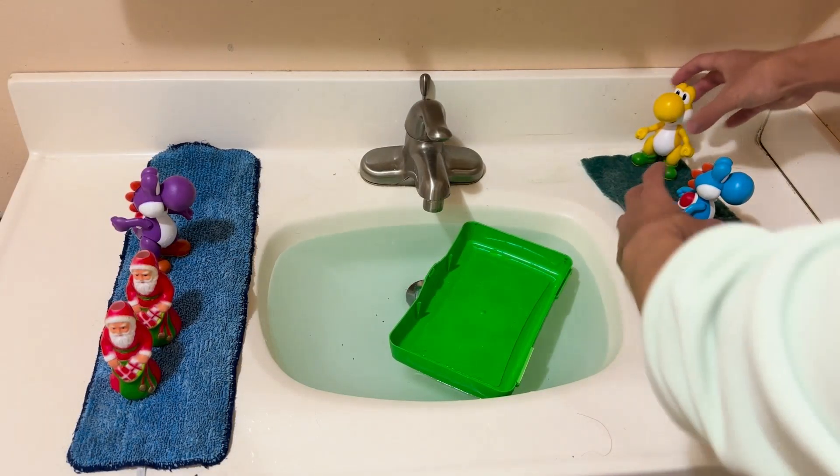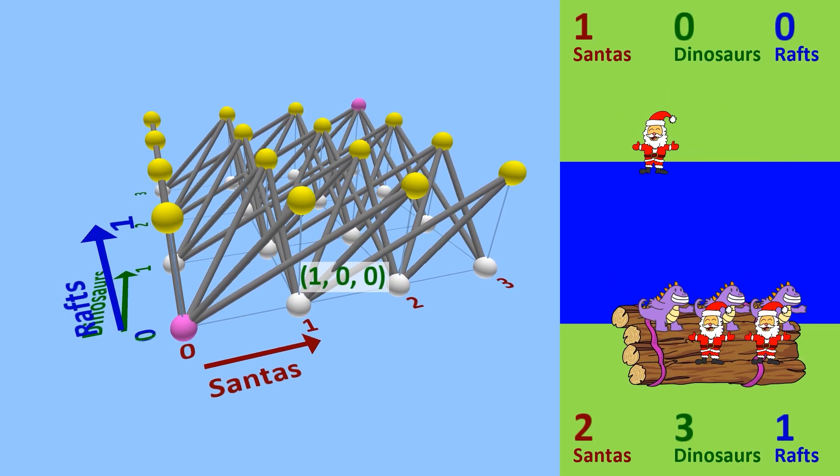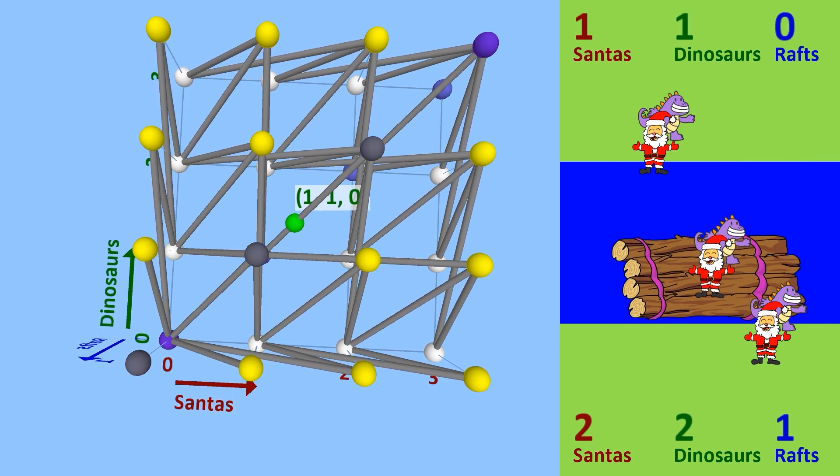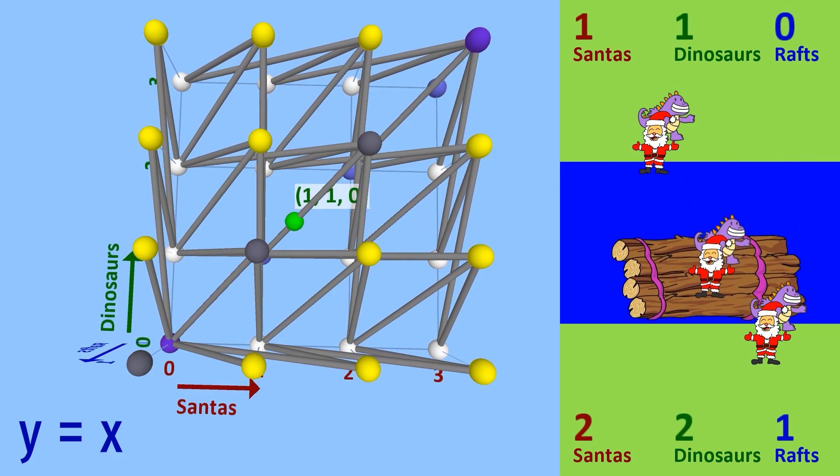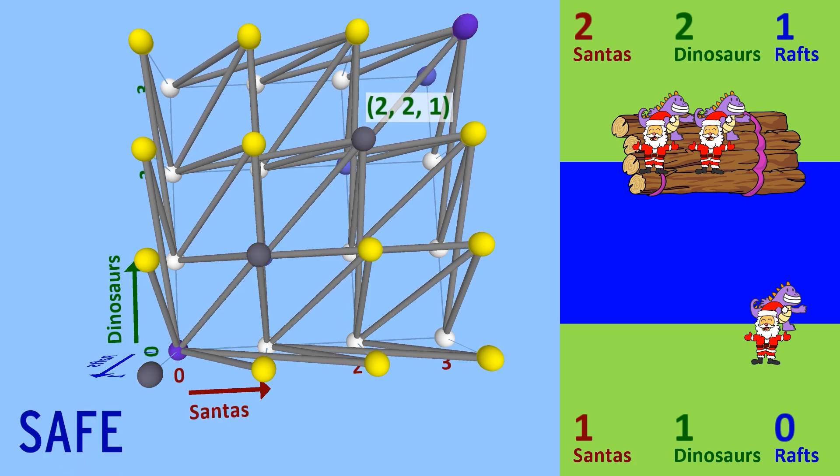Anyway, we're getting close to finding a solution, but we can't forget the caveat that dinosaurs will eat Santas if they ever outnumber them on either bank. This means there are certain states we have to avoid, but which ones? Well, first, these points on the diagonal represent where Y equals X, meaning the number of dinosaurs and Santas on the end bank are equal. So the number on the starting bank are also equal, so these are safe.